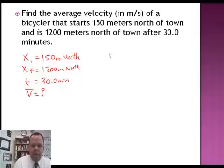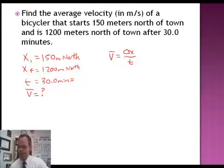Now, next I'm going to write out the equation. Average velocity equals delta x over t. I want this in meters per second. So the first thing I need to do is convert 30 minutes into seconds.